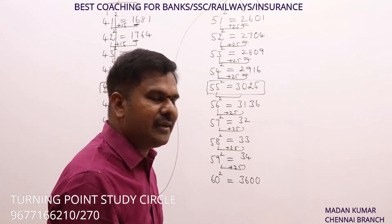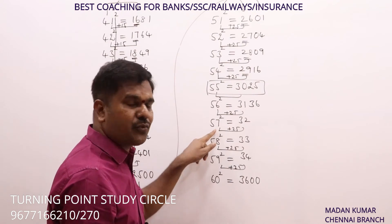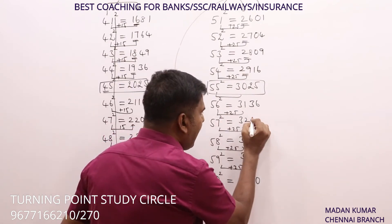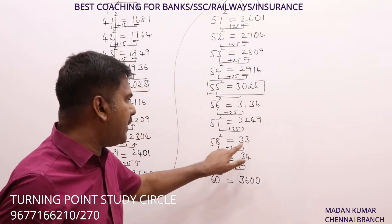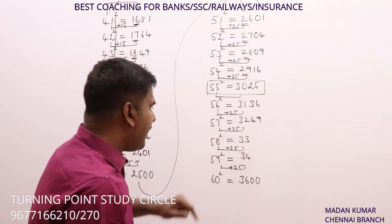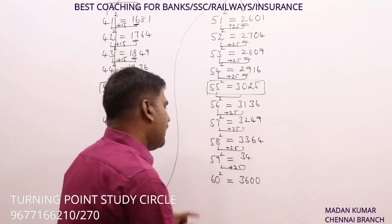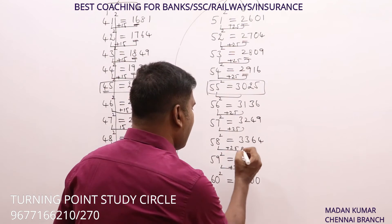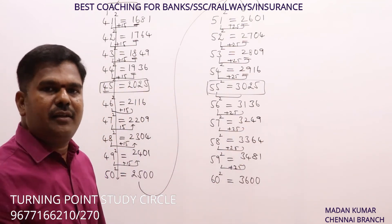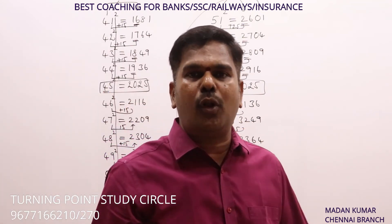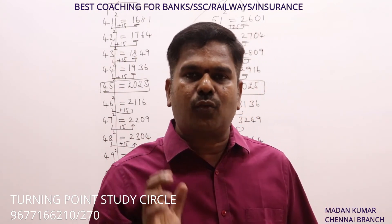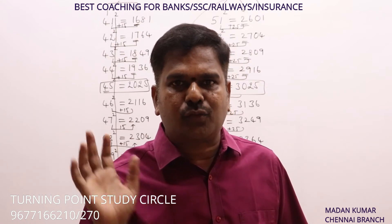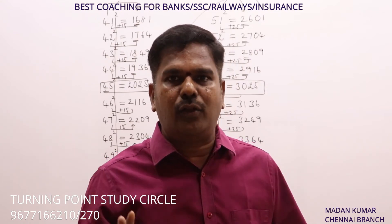56² = 3136. 57²: 7 + 25 = 32, 7² = 49, answer: 3249. 58²: 8 + 25 = 33, 8² = 64, answer: 3364. 59²: 9 + 25 = 34, 9² = 81, answer: 3481. Summary: for 41–50, unit digit + 15 and indirect square; for 51–60, unit digit + 25 and direct square. We consider only unit digit values.